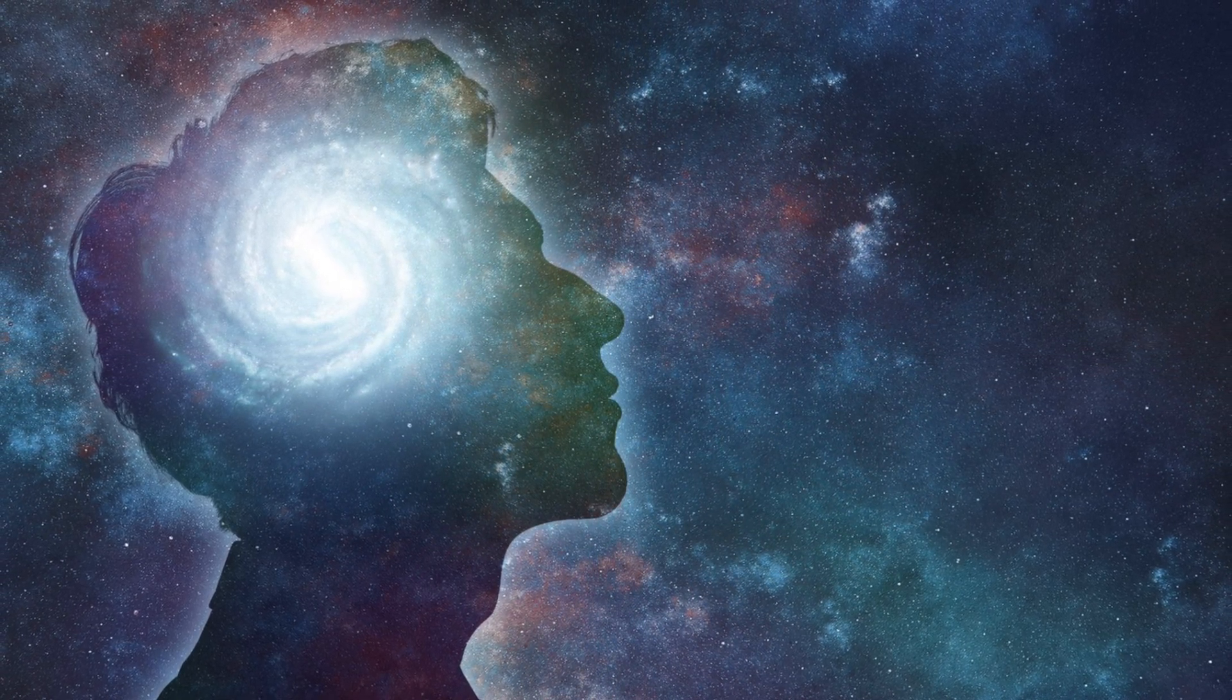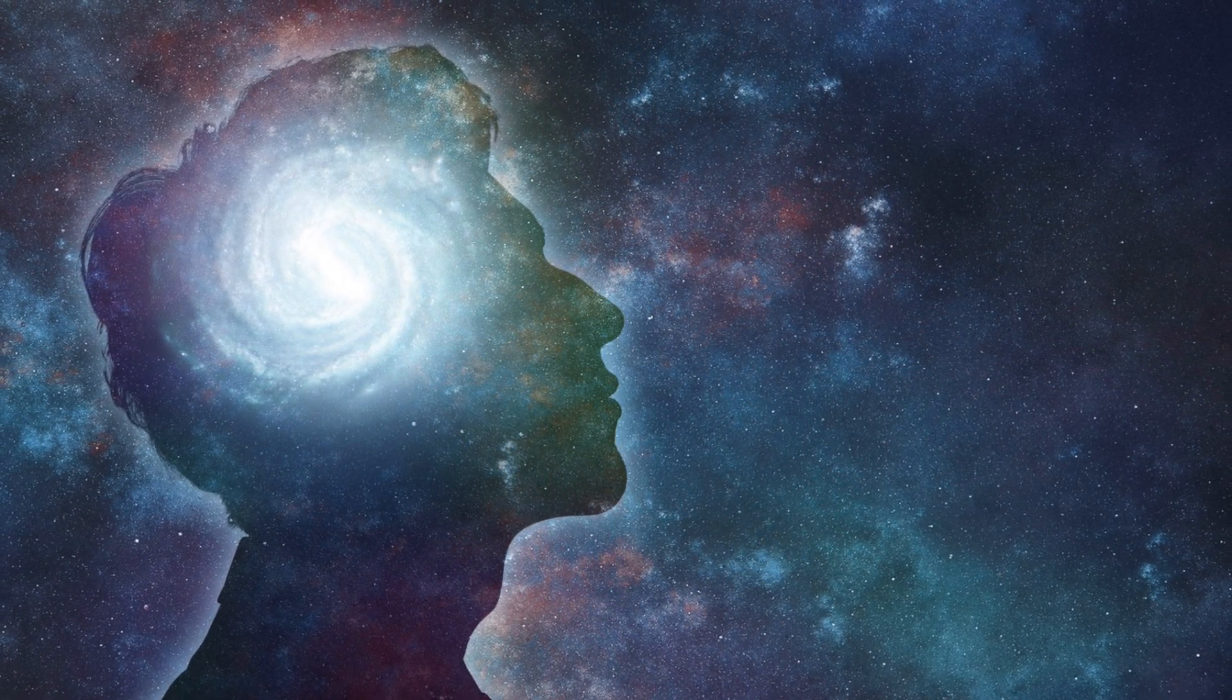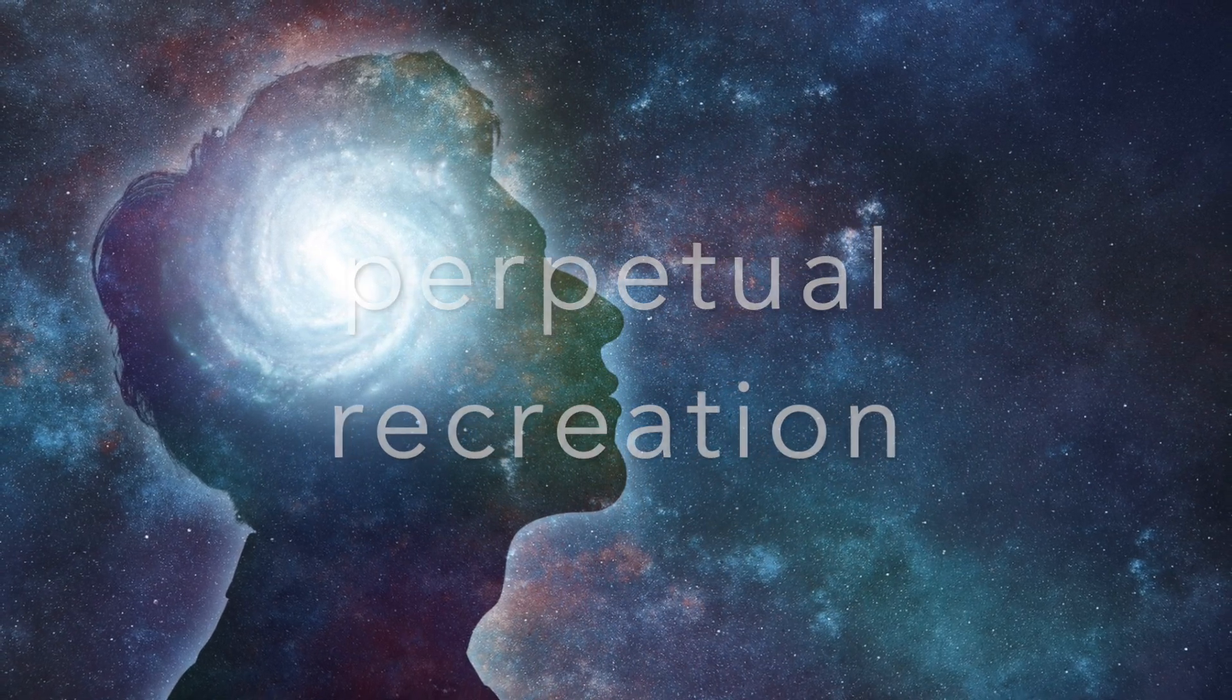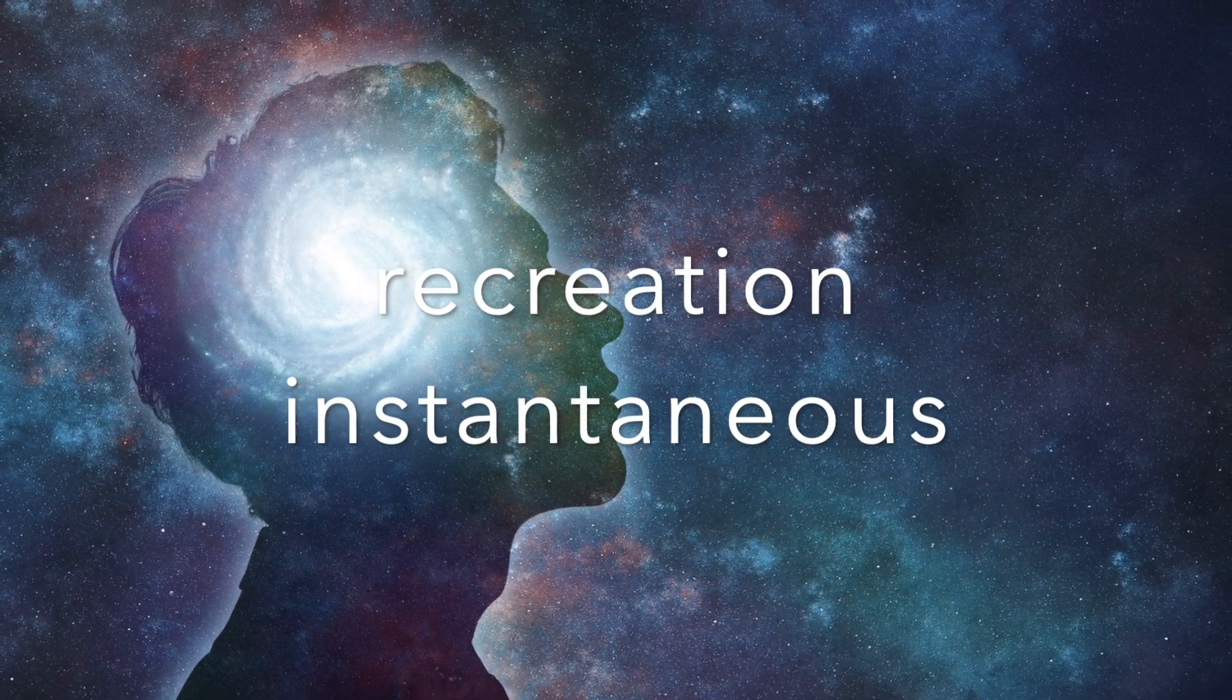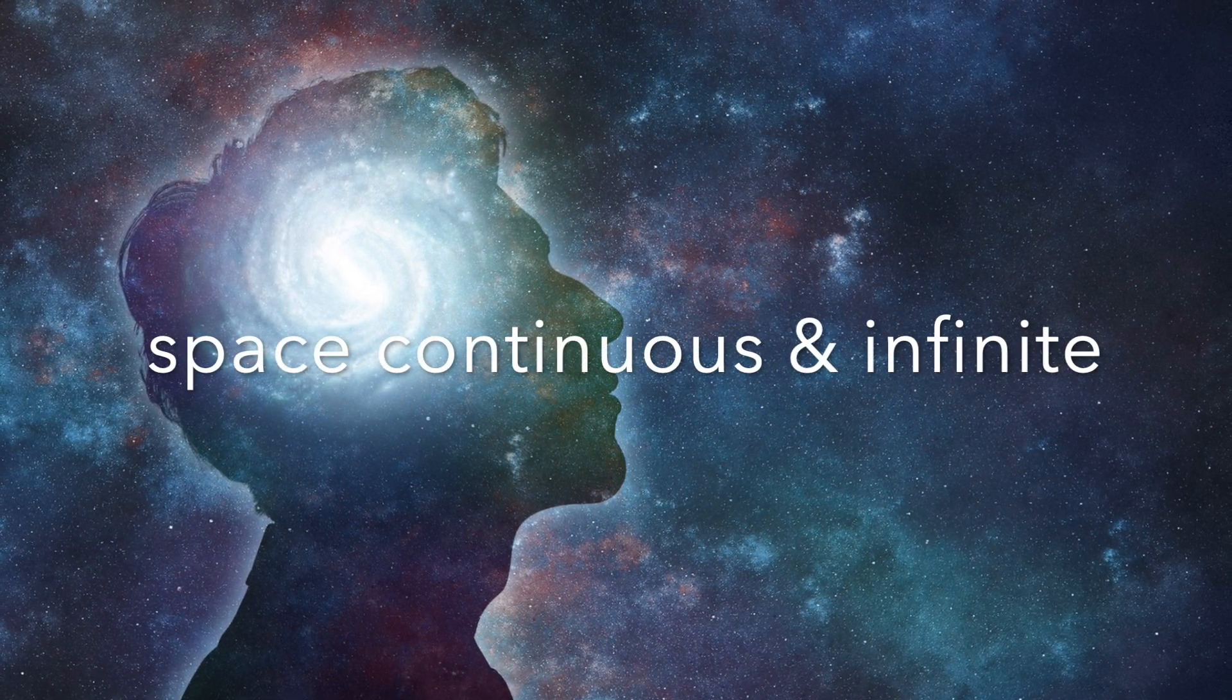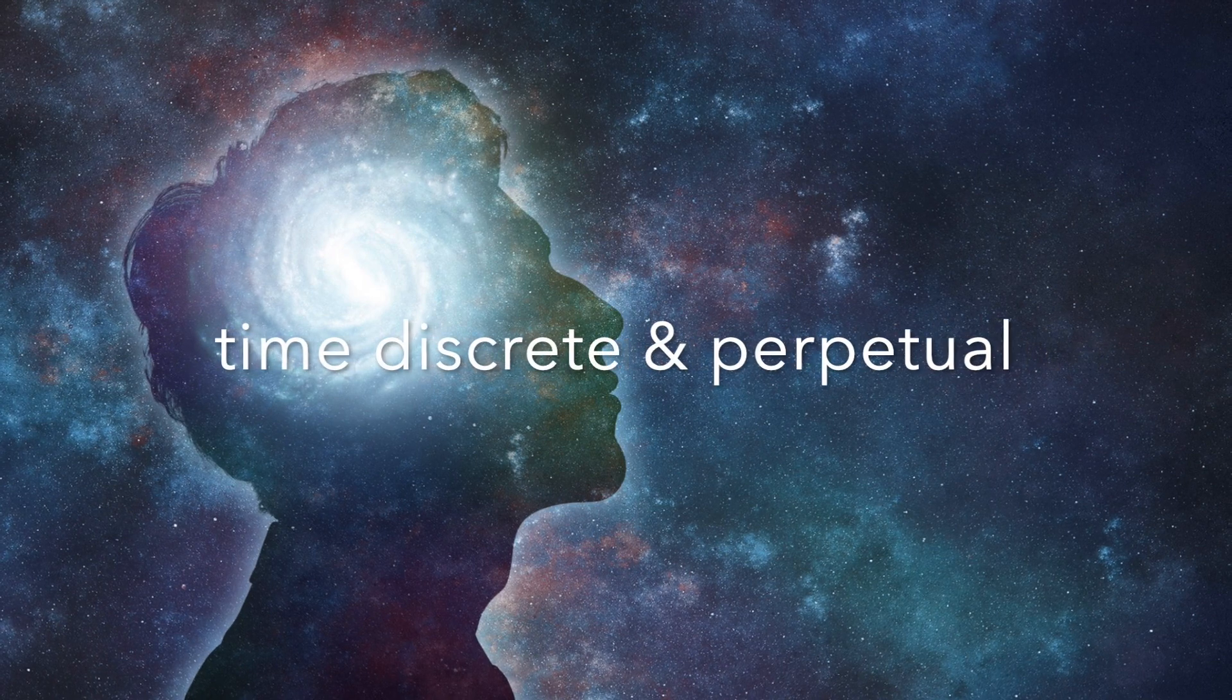In short, the model has the following characteristics or features. One, there is a perpetual appearance or re-creation of the entire space and matter, moment to moment. Two, each re-creation of space is instantaneous. Three, space is continuous and infinite. And finally, four, time is discrete and perpetual.